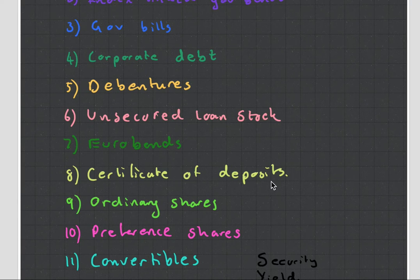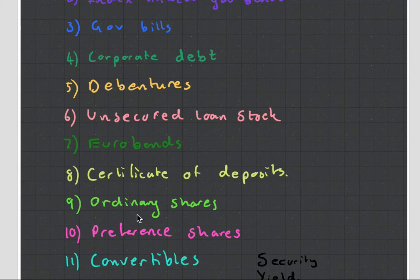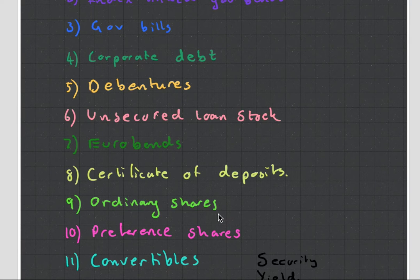Then you have certificates of deposit — that's some sort of paper instrument that you can use with regard to banks, you can trade them. Ordinary shares are when you go to the stock market and think a company is going to do really well, so you invest your money behind them, and in return you get a little bit of the company's profits in the form of dividends. It's a cash flow where amounts are uncertain, but you're hoping them to continuously increase, and you can always sell your shares at a later date.